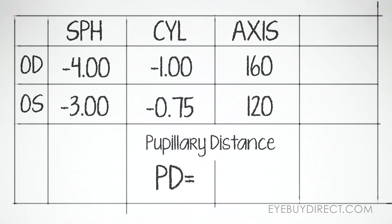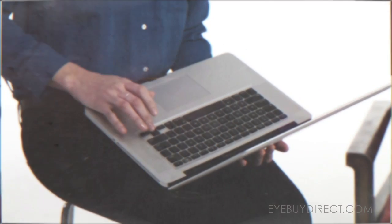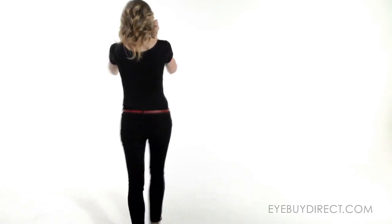Now sometimes your PD will be written as two numbers, say 63/61. The first number is your far distance, and the second number is your near distance. If you're ordering just single vision lenses, then you only need your far distance. But if you're looking at progressive or bifocal, then you'll also need your near distance.